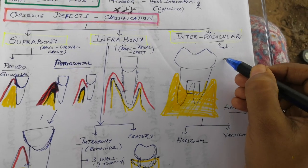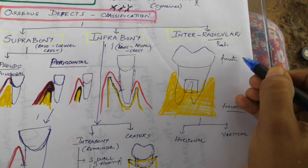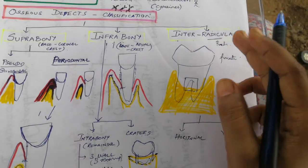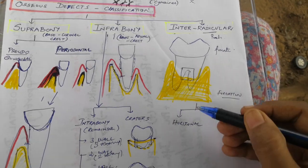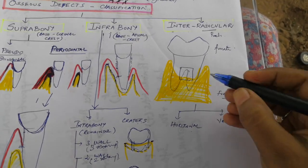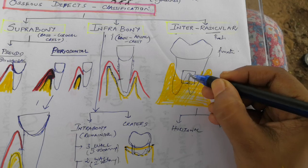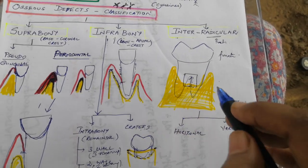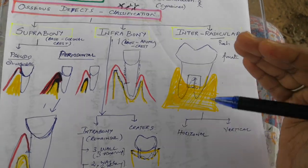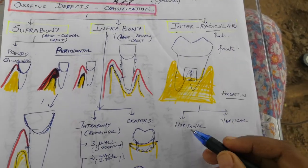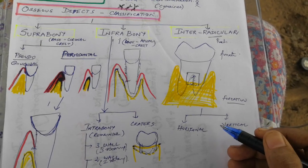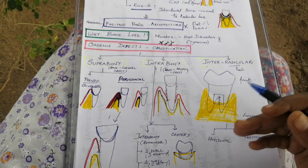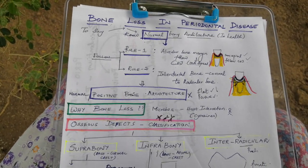The third category is interradicular defects — 'radicular' refers to roots, so this is bone loss in the furcation area between the roots. It is classified based on how much bone is lost vertically and horizontally buccolingually. Furcation defects will be discussed in detail in the next videos. This is the overall view of osseous defects in periodontal disease.